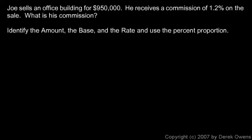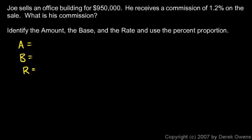We're told to identify the amount, the base, and the rate, and use the percent proportion. I'm going to do that and then also show you another way to solve this problem. The amount is what we're looking for — what fraction he gets to keep — so I'll put a question mark there. The base is the total, the thing we're taking a percentage of, and that's nine hundred and fifty thousand dollars. The rate is the percentage: 1.2 percent.